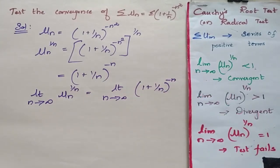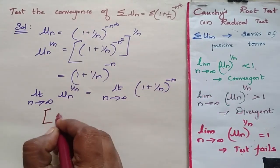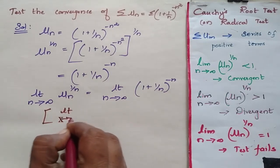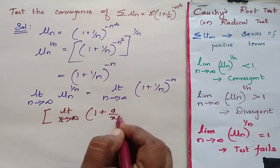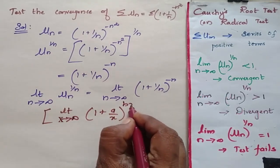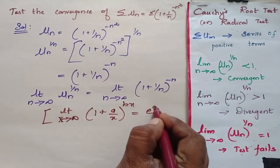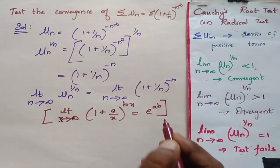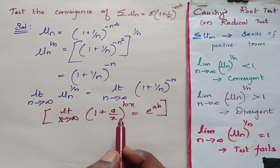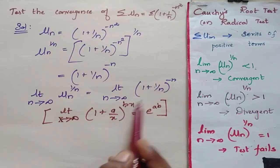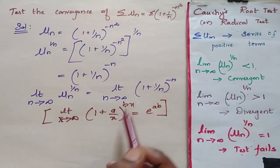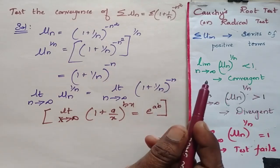Now you have to remember one formula here where we should know that limit n tending to infinity of 1 plus a by x to the power b x is equal to e power a b. So here in the place of a you have 1, in the place of b you have minus 1, and in the place of x it is n.